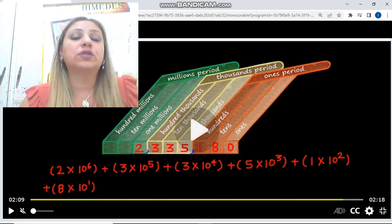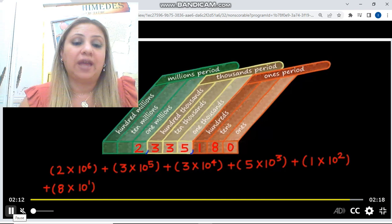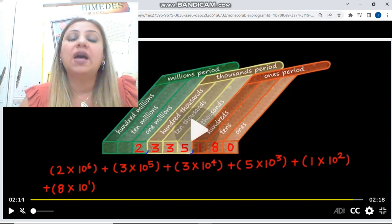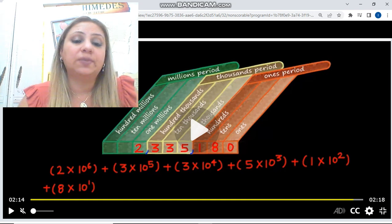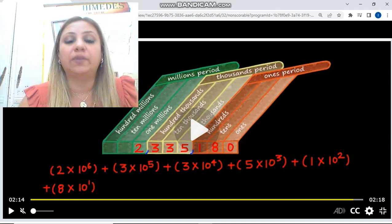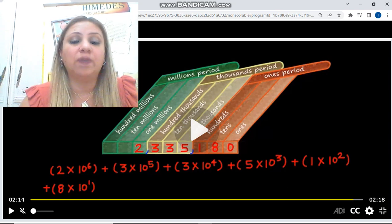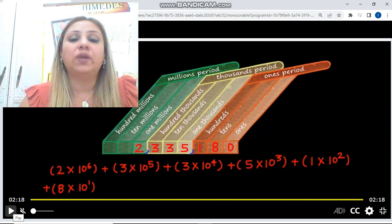And you have, of course, the word form. It's exactly the same way as you read the number. And as you see, this chart helps us read the number easily. The 2 is in the millions place, so you can start with two million. We have two commas. As I told you, we have to separate the numbers or the periods by using the commas to make it easier for us to read the number. Then 335,000, since it's in the thousands period, then 180.